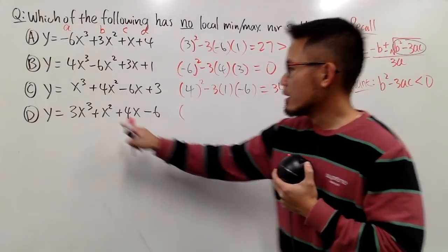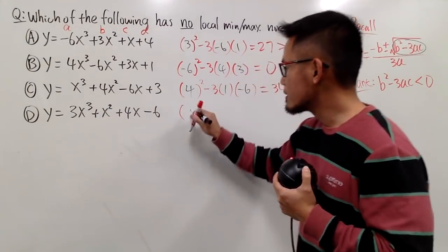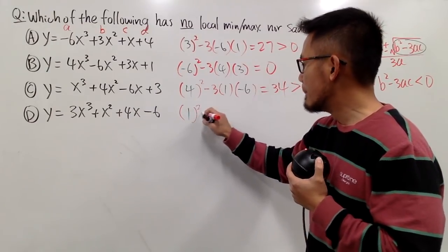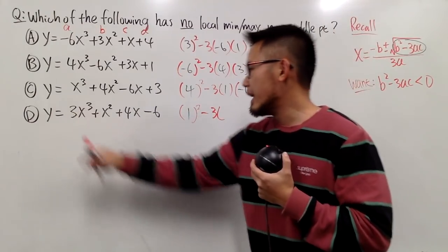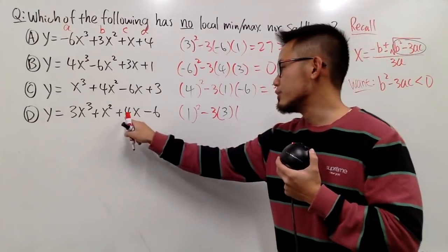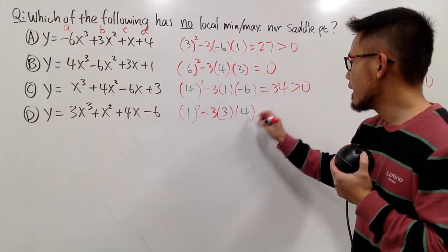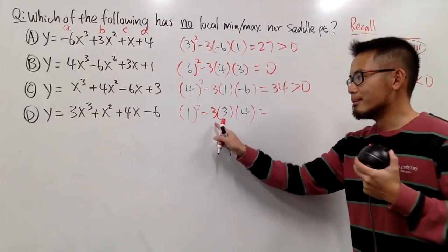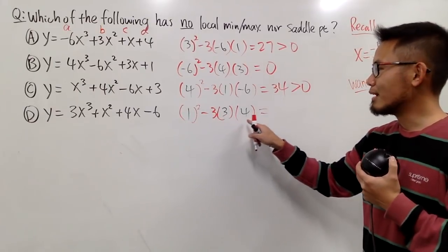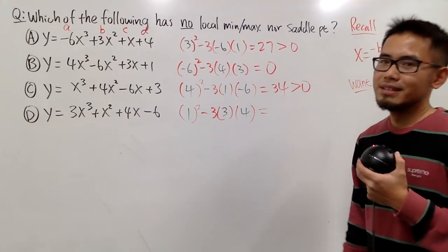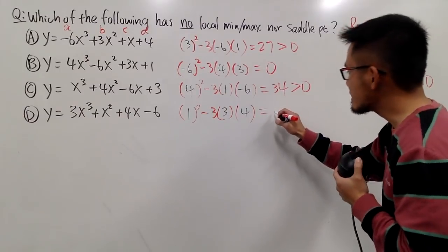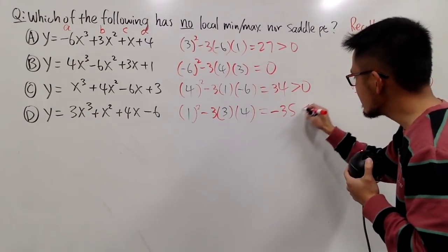Right here the b value is 1, so we have 1 squared minus 3 times a which is 3, times c which is 4. And now let's take a look. 1 minus this times this times that is 36.